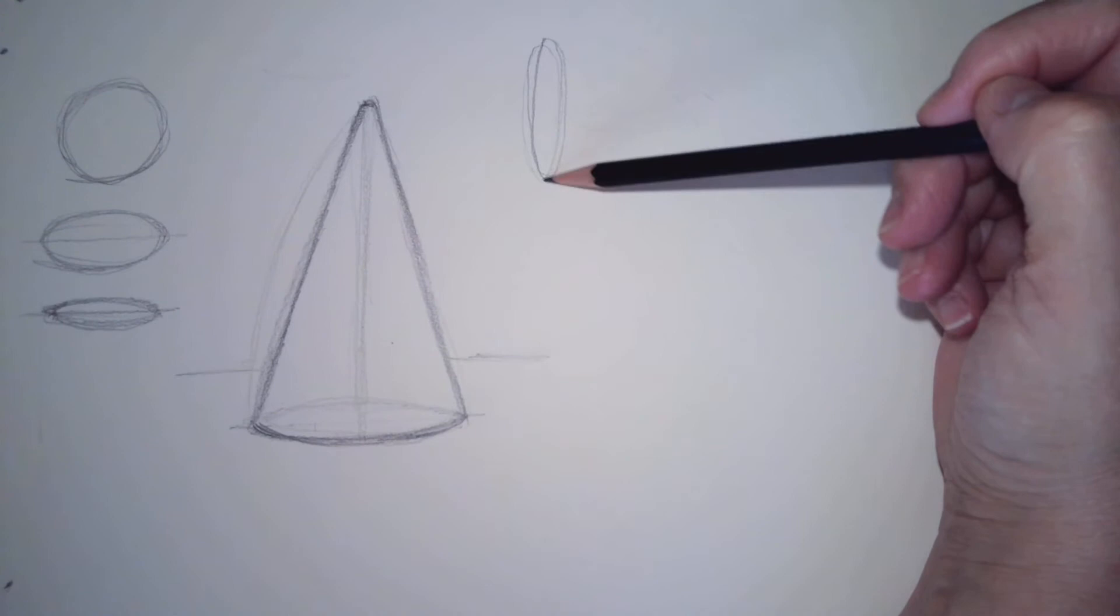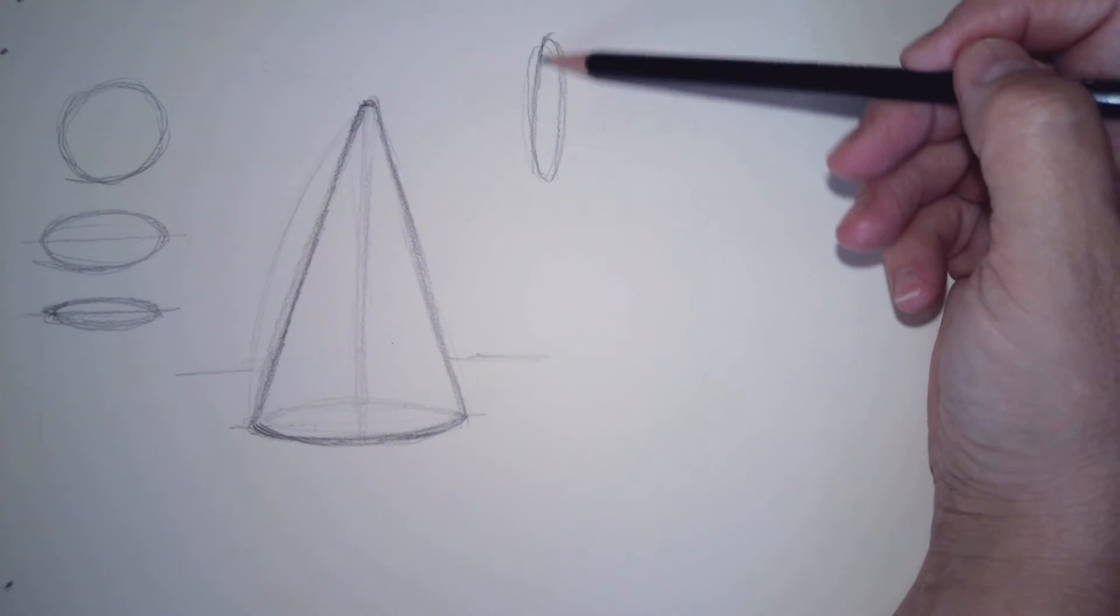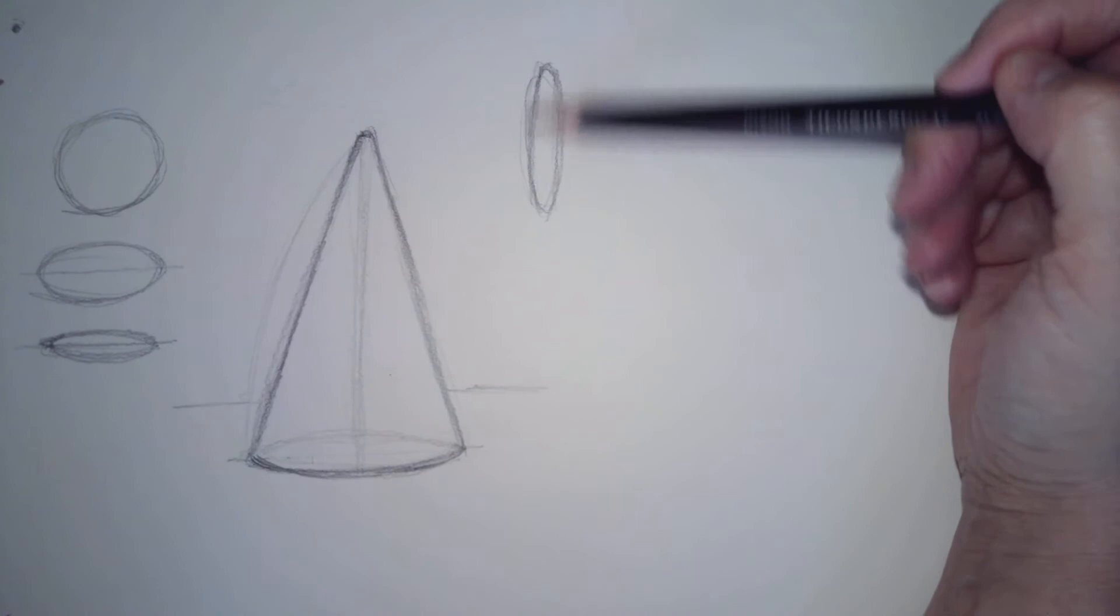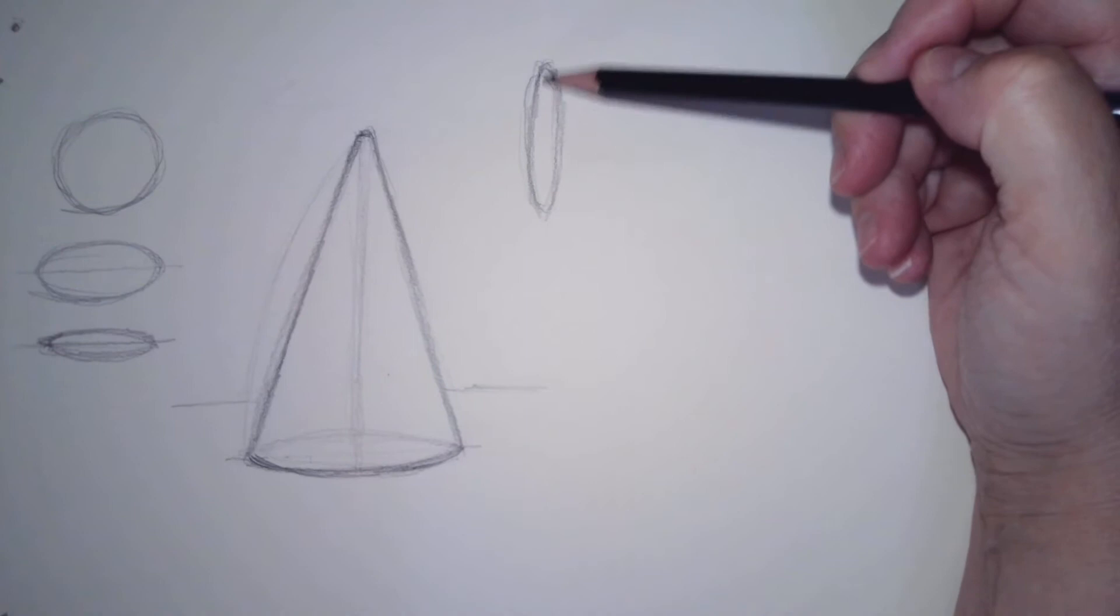We start with another ellipse. I'm going to tell you over and over again, don't try to be perfect. Let's move this down just a little bit. Don't try to be perfect with it. The more you practice, the better you're going to get. So there's my ellipse on its side.